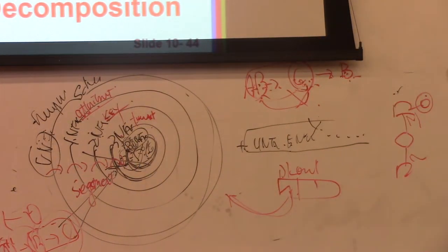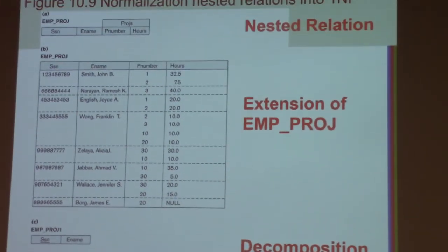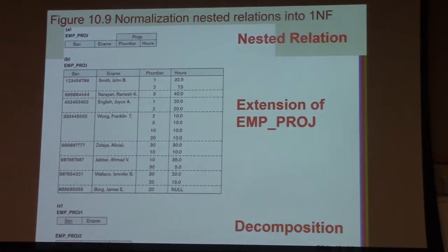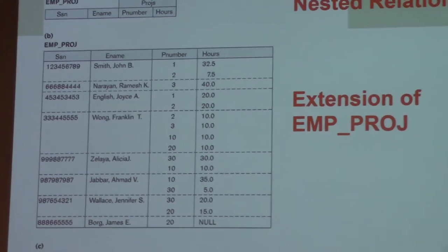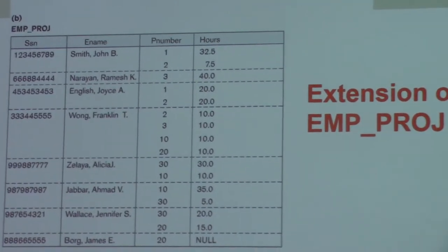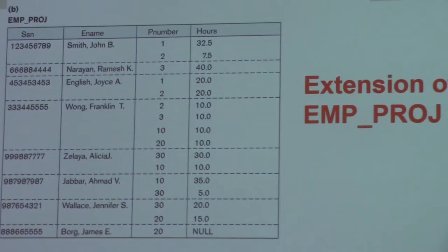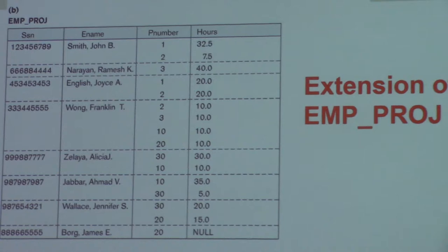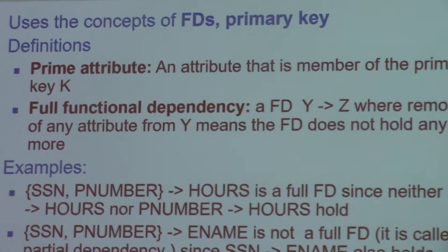What about this? The Employee_Project attribute has P_number and hours — that means nested attributes. Is it first normal form? No — first normal form does not allow nested attributes. The solution is decomposition: we can separate it into Employee_Project_1 and Employee_Project_2. That is the first normal form.